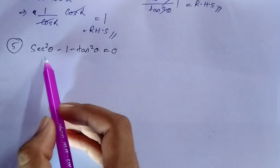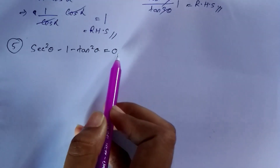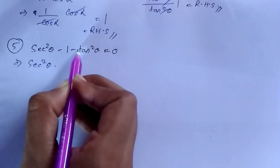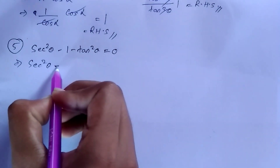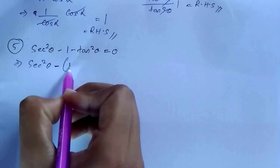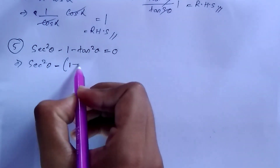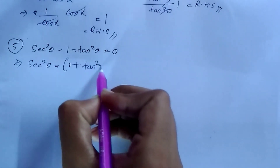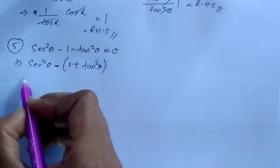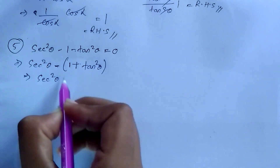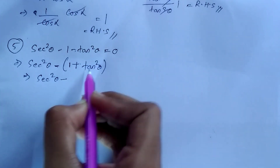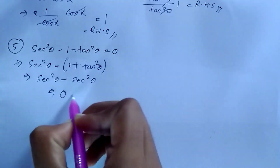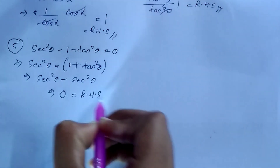Question number 5: prove that sec²θ − 1 − tan²θ = 0. We take −1 common from the last two terms: it becomes −(1 − tan²θ). Inside the bracket, −1 times −tan²θ gives +tan²θ, so we have sec²θ − (1 − tan²θ). We know that 1 + tan²θ = sec²θ, so these cancel and we are left with 0, which equals your RHS. Hence proved.